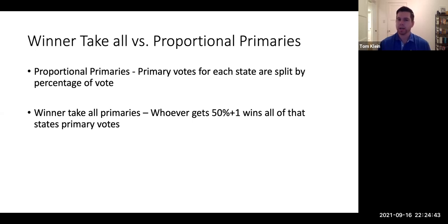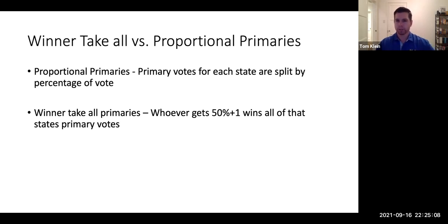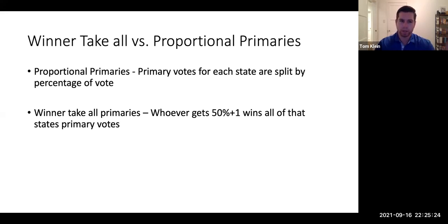A proportional primary is when primary votes for each state are split by a percentage of the vote. For example, in California, if you win 40% of the vote, you get 40% of that state's delegates; if you win 60%, you get 60% of the delegates. Winner-take-all primaries are different — whoever wins the majority of the vote gets all of that state's primary votes. Whether a state uses proportional or winner-take-all depends on the state and the party.